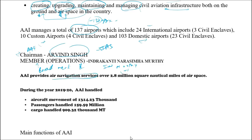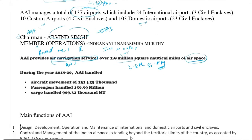Airports Authority of India also provides Air Navigation Services (ANS) over the airspace of India and surrounding areas, which approximately covers 2.8 million square nautical miles.